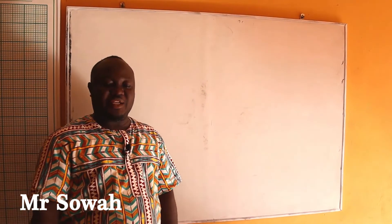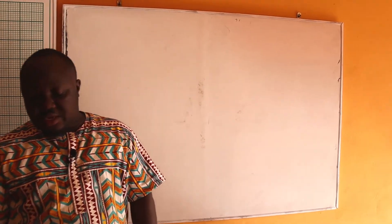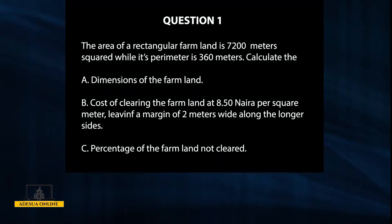We are going to continue by solving the question. The area of a rectangular farmland is 7,200 m² while its perimeter is 360 m. Calculate the dimensions of the farmland. B, cost of clearing the farmland at 8.50 naira per square meter, leaving a margin of 2 meters wide along the longer sides. And C, percentage of the farmland not cleared.